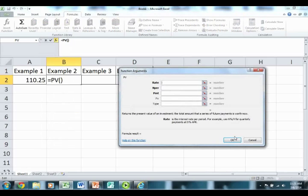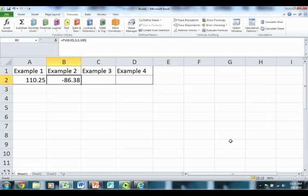Again, the rate here, number of periods was three years, no payments in between, $100 in the future. And what do I get? I get the $86.38.